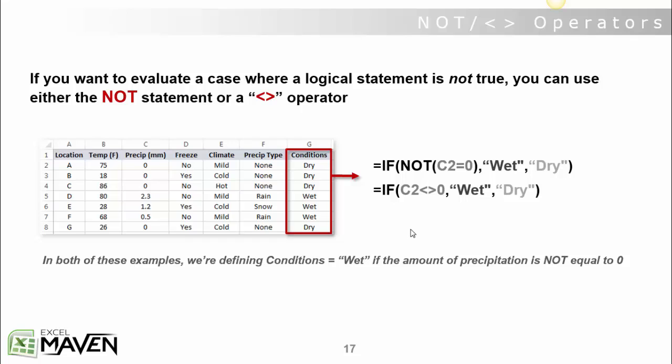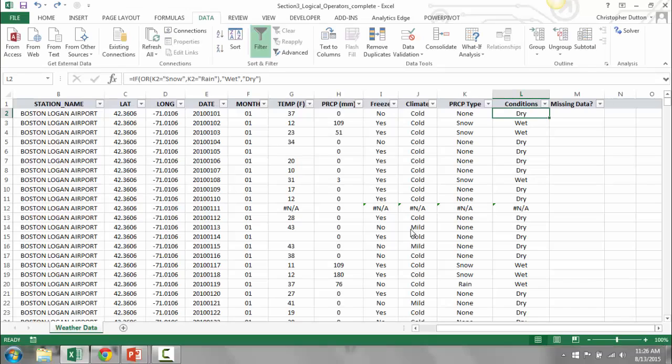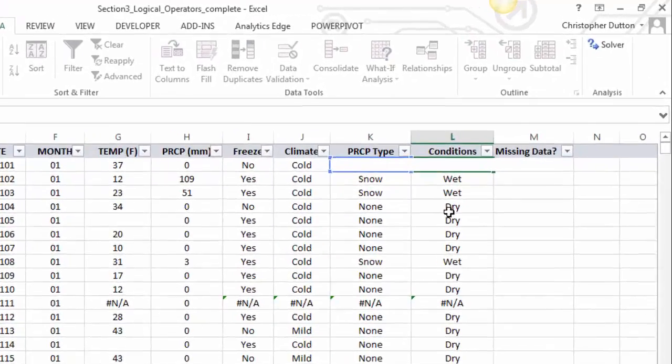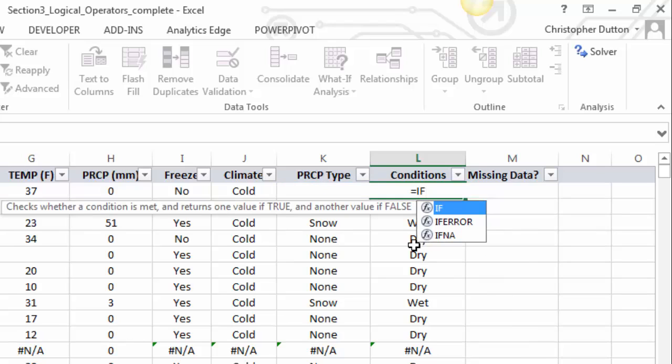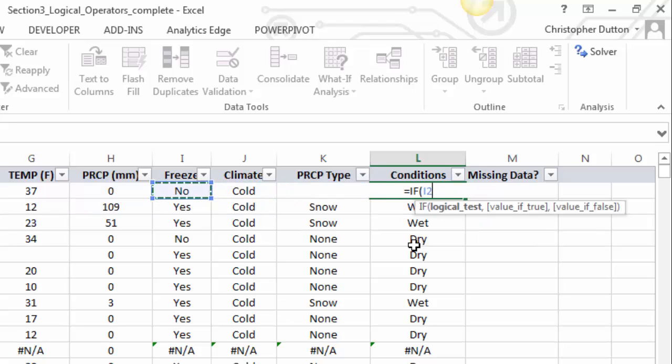Jumping over to Excel, what I'm going to do is revisit the conditions formula that we created in the last lecture using the OR statement. I'm just going to delete that and start from scratch. I'm going to use a not-equal-to test to accomplish the same thing, and I'm going to use the precipitation field as my variable.